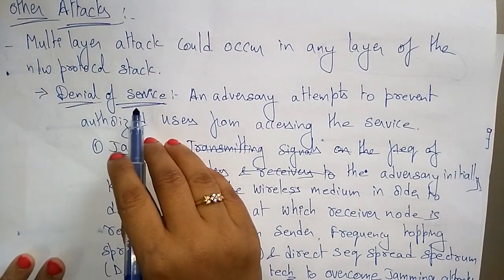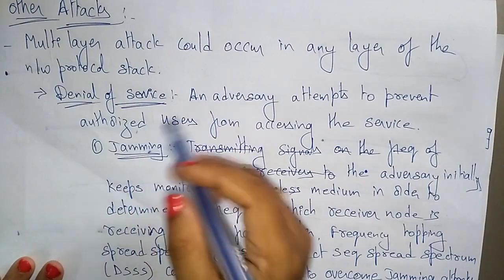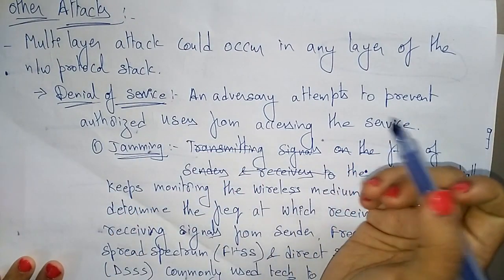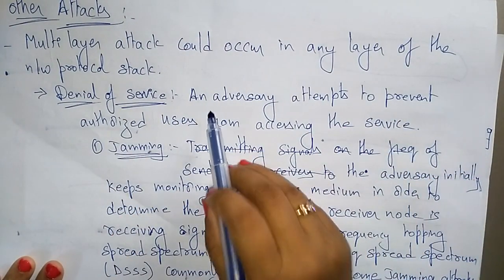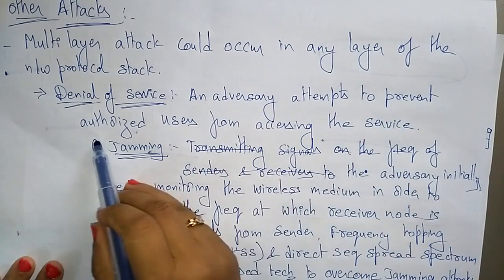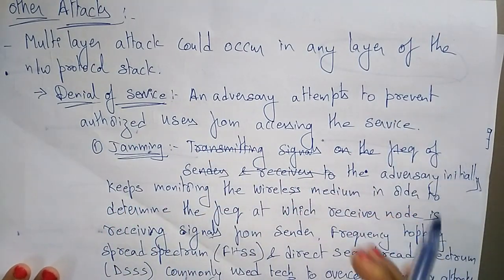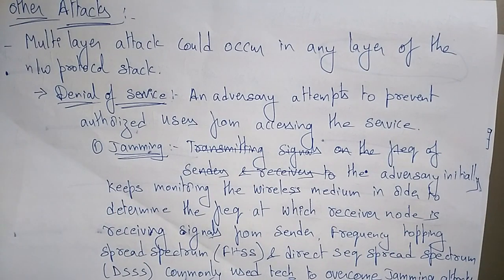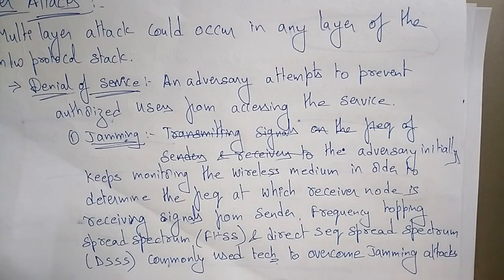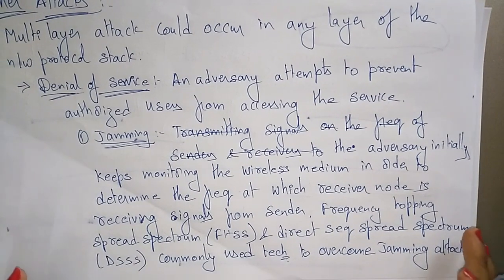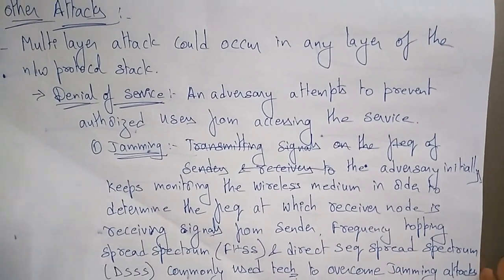Denial of service may occur in any layer. An adversary node attempts to prevent authorized users from accessing the service. When authorized users are not able to access the service, that is called a denial of service attack.